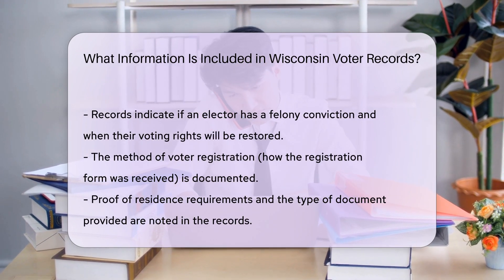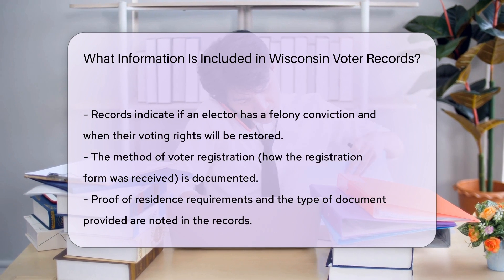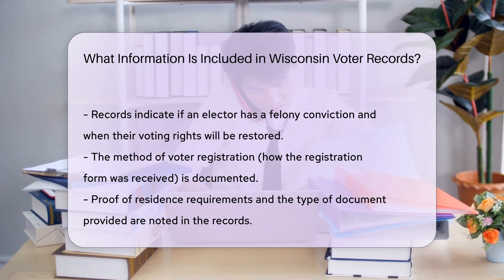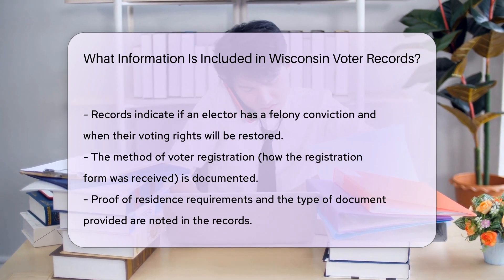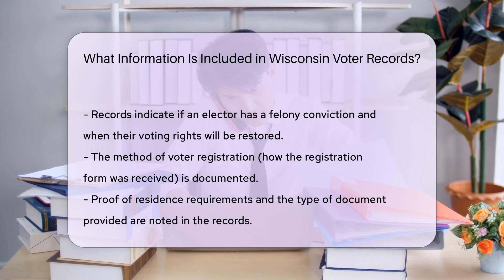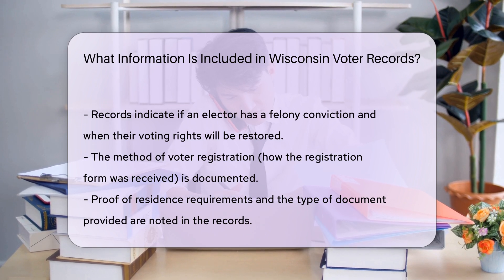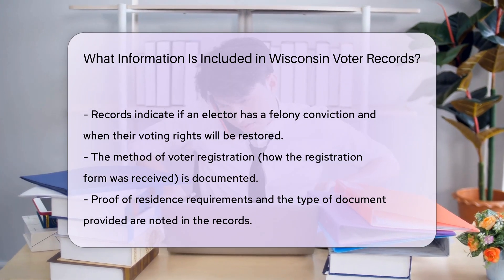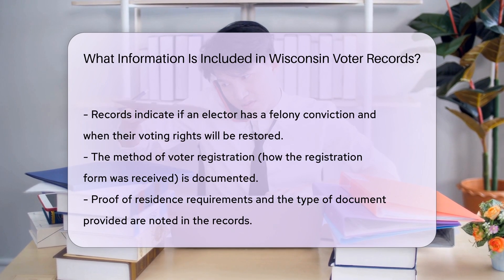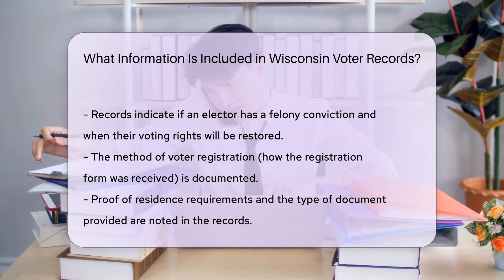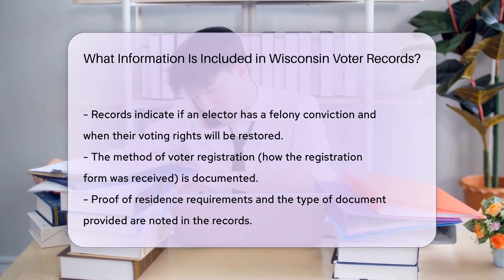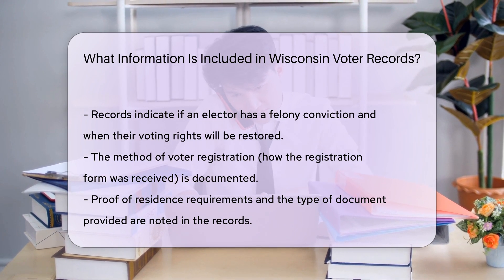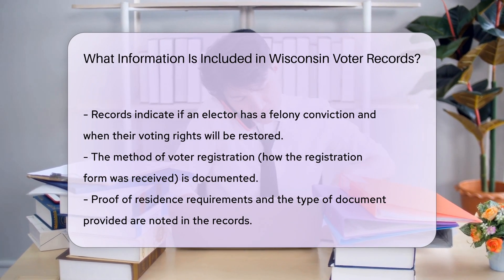Proof of residence: whether the elector was required to provide proof of residence and the type of document provided is documented. Absentee voting: the date on which the clerk mailed an absentee ballot and the date it was returned are recorded. Polling location: the polling location associated with the elector's address and ward, as well as the mailing address for the municipal clerk, are included.